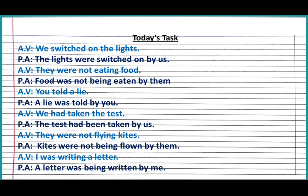Next sentence: 'They were not flying kites.' This is a negative sentence from past continuous tense. 'Kites' is plural, and 'flown' is the third form of 'fly' — we always use the third form in passive voice. The answer is: 'Kites were not being flown by them.' The last sentence is: 'I was writing a letter' — past continuous tense. The answer is: 'A letter was being written by me.'